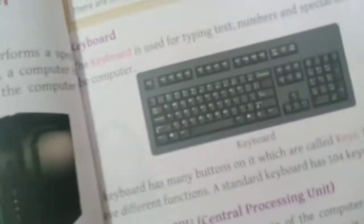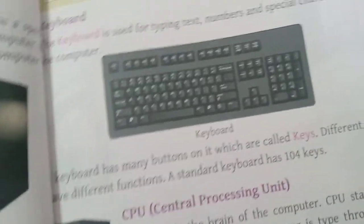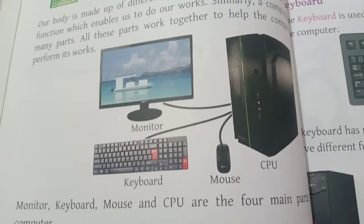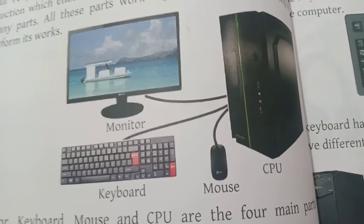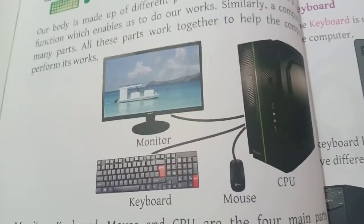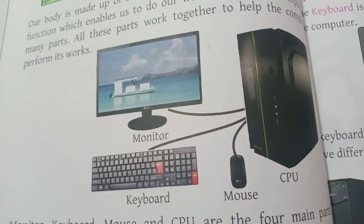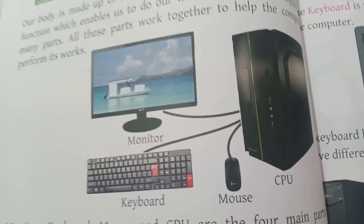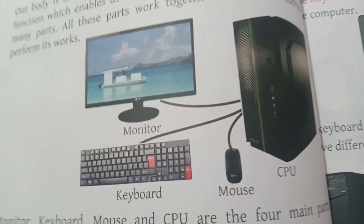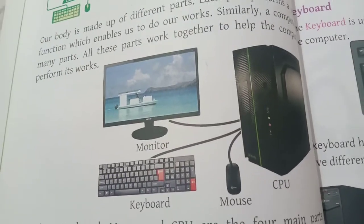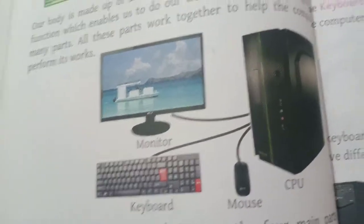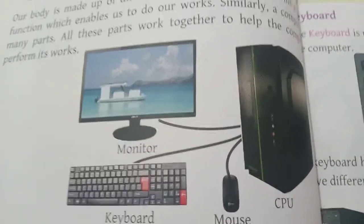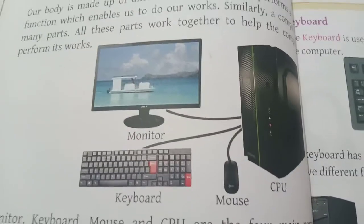These four are the important parts of a computer: monitor, keyboard, mouse, and CPU. Monitor looks like a television and is called a visual display unit. We can type using the keyboard, draw pictures and point using the mouse, and CPU is the central processing unit — the brain of the computer. Have you understood everything? Thank you.